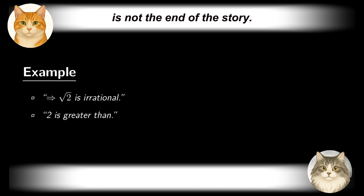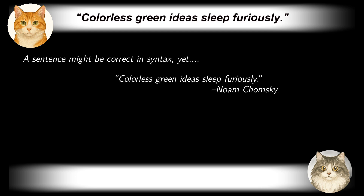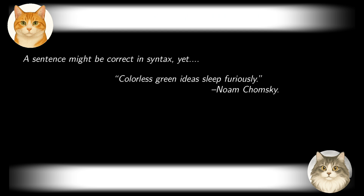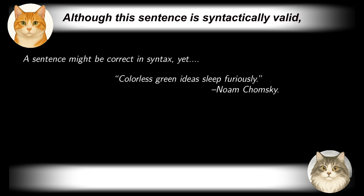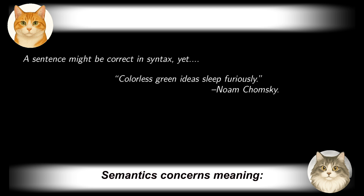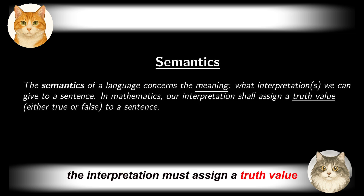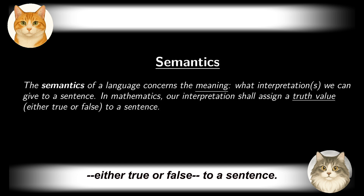Syntactical correctness is not the end of the story. Consider Noam Chomsky's famous example: 'Colorless green ideas sleep furiously.' Although this sentence is syntactically valid, it fails semantically with contradiction and absurdity. Semantics concerns meaning — what interpretations can we assign to a sentence? In mathematics, the interpretation must assign a truth value — either true or false — to a sentence.